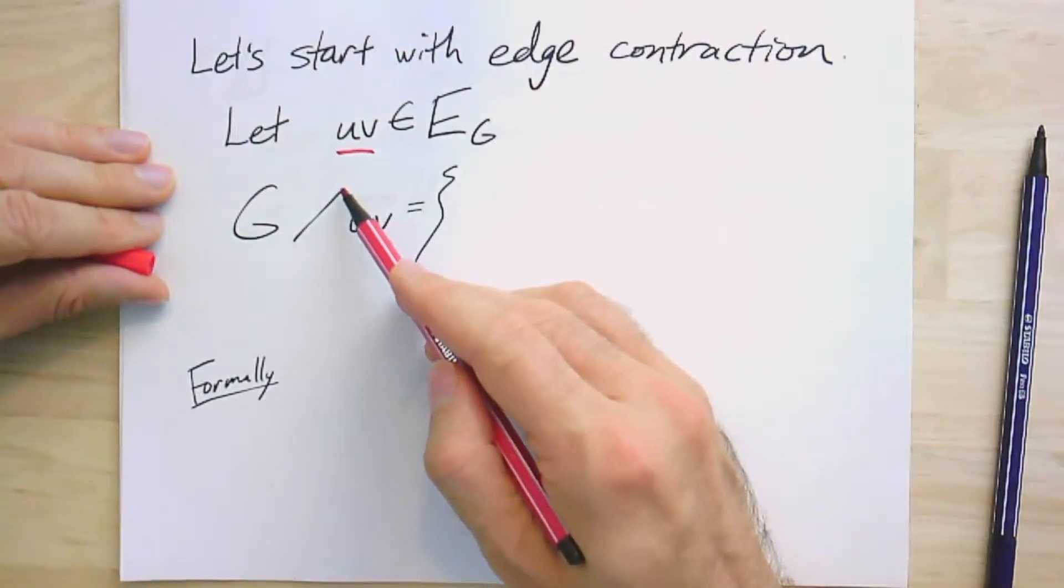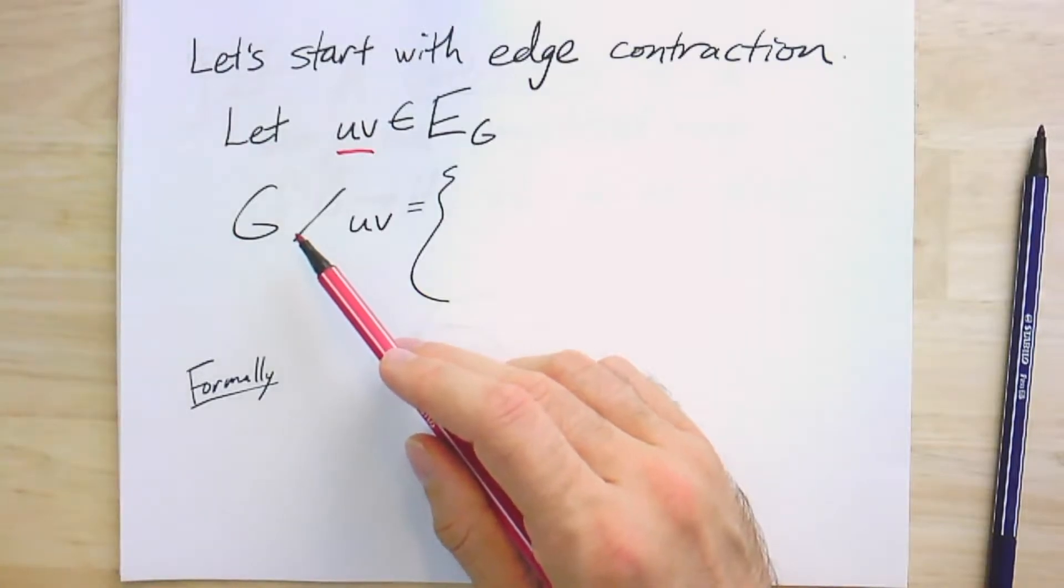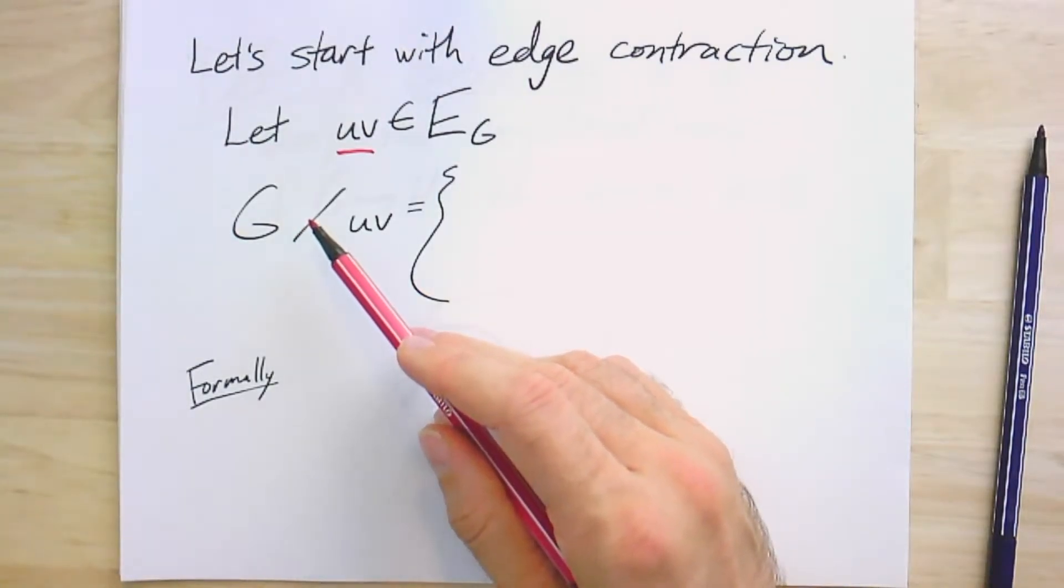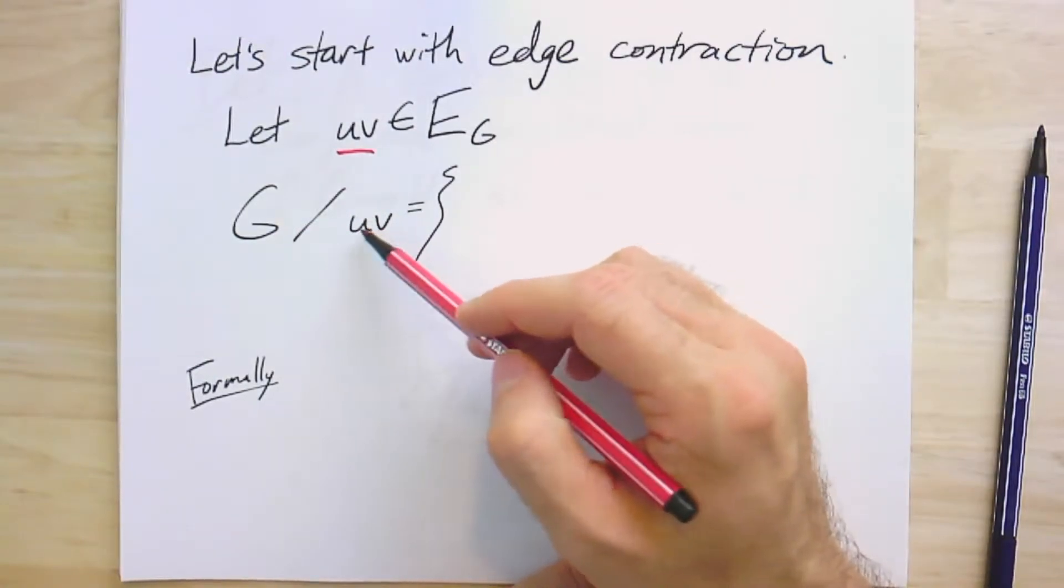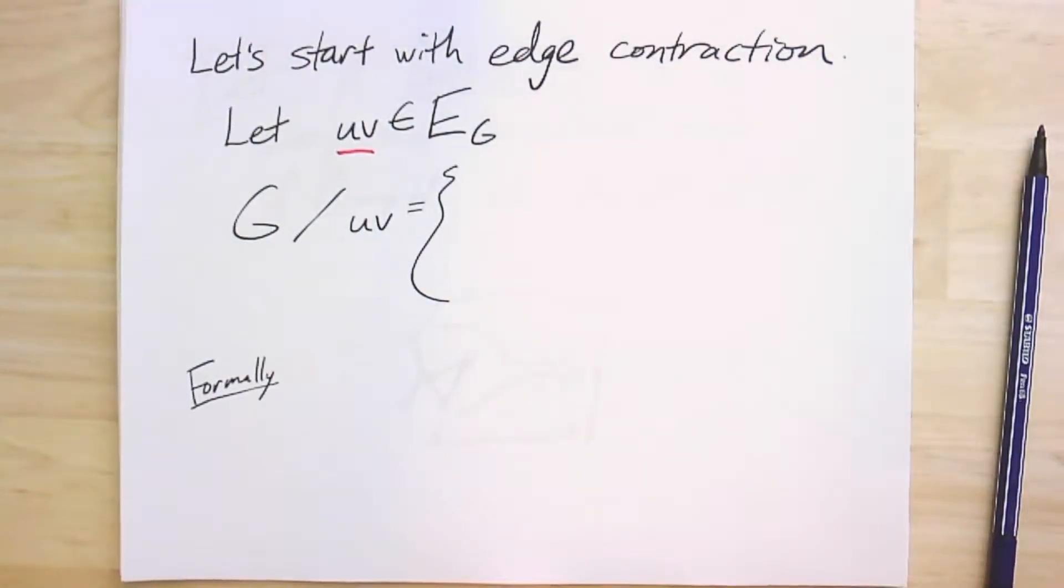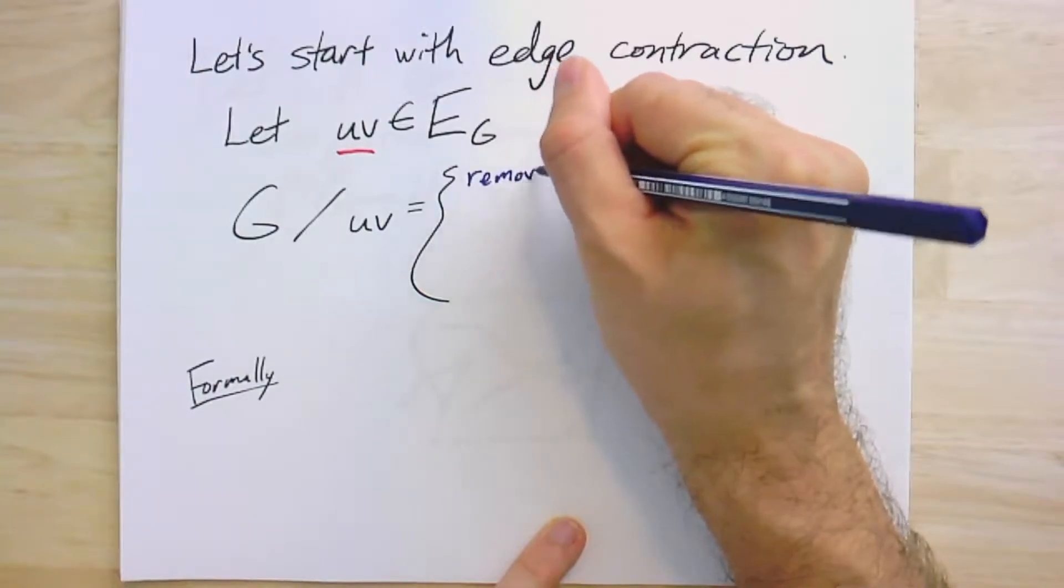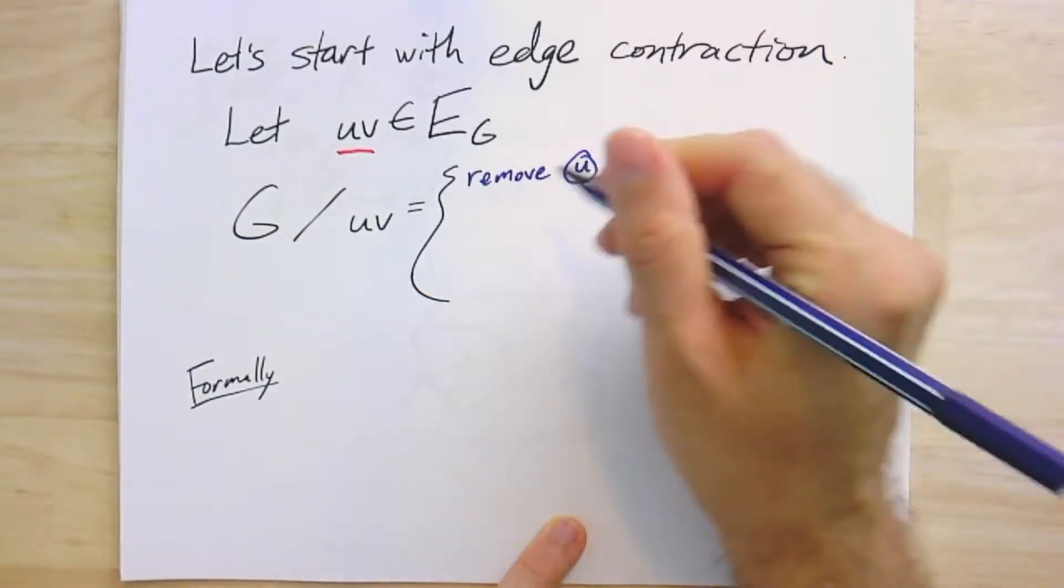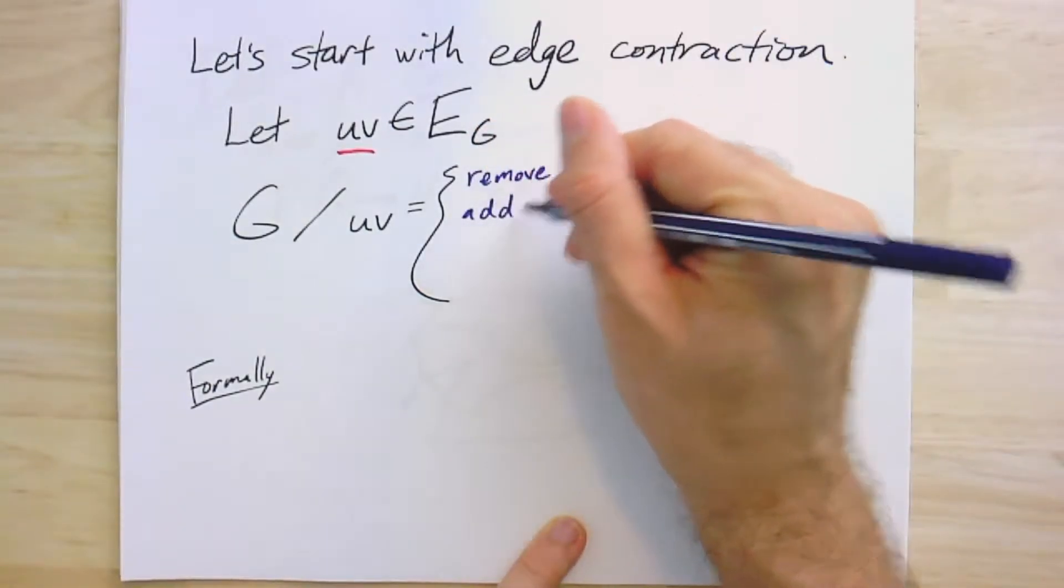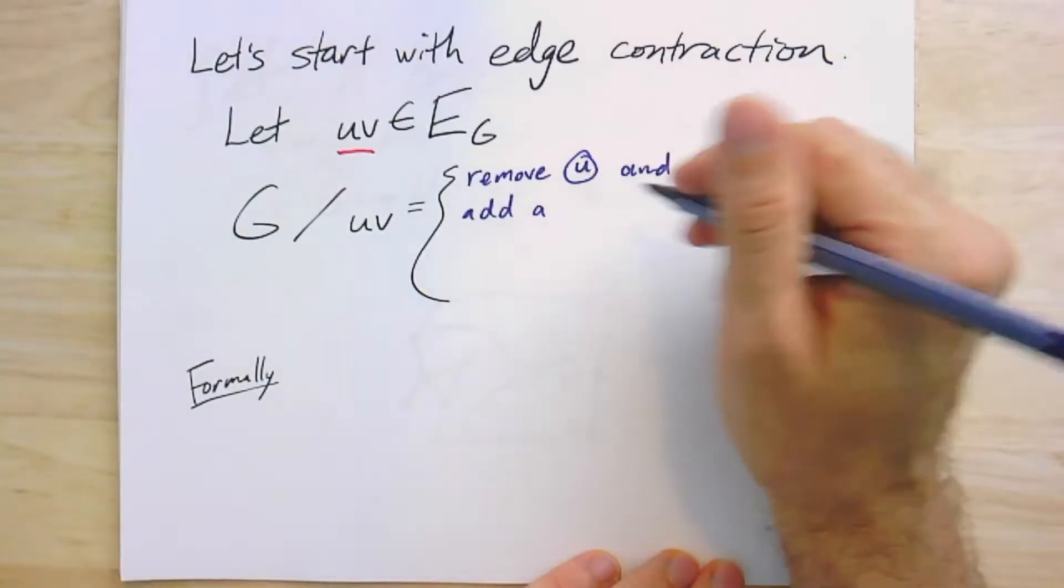And the reason for this division is it's supposed to recall other kinds of quotient operations where you have some identification of different pieces. So in this case, I'm really taking U and V, and I'm identifying them in the new graph. And one way I might think of that as an operation is that I'm kind of removing U and V, and I add a new vertex, which is the combined vertex for the pair.